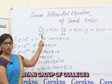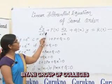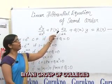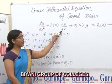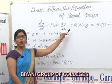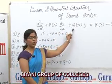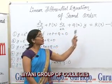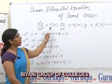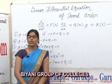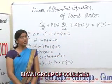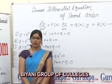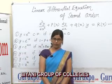An equation of the form d²y/dx² plus P(x)·dy/dx plus Q(x)·y is equal to r, where P, Q, and r are functions of x, is called a linear differential equation of second order.